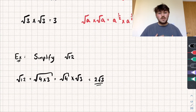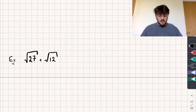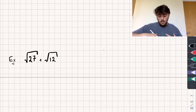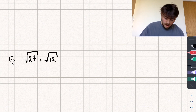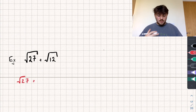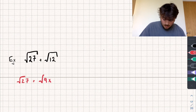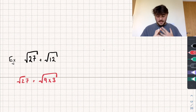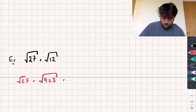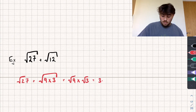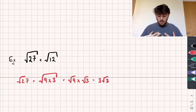Now we know how to simplify surds, we can answer questions like: the square root of 27 plus the square root of 12. We'll simplify them one by one. Starting with the square root of 27: are there any square number factors of 27? We could use 9, so it's the square root of 9 multiplied by 3, because 9×3=27. Using our first rule, this is √9 times √3, which equals 3√3, since the square root of 9 is 3.